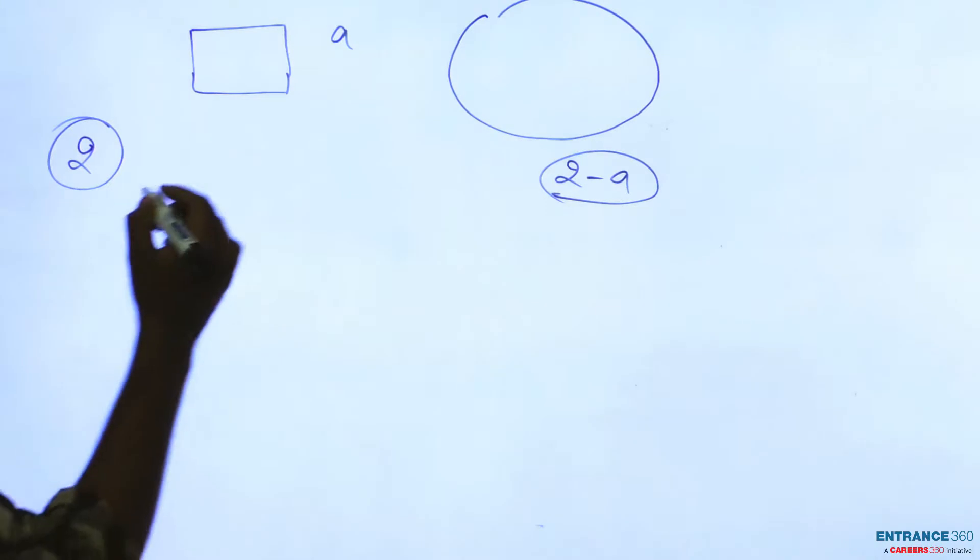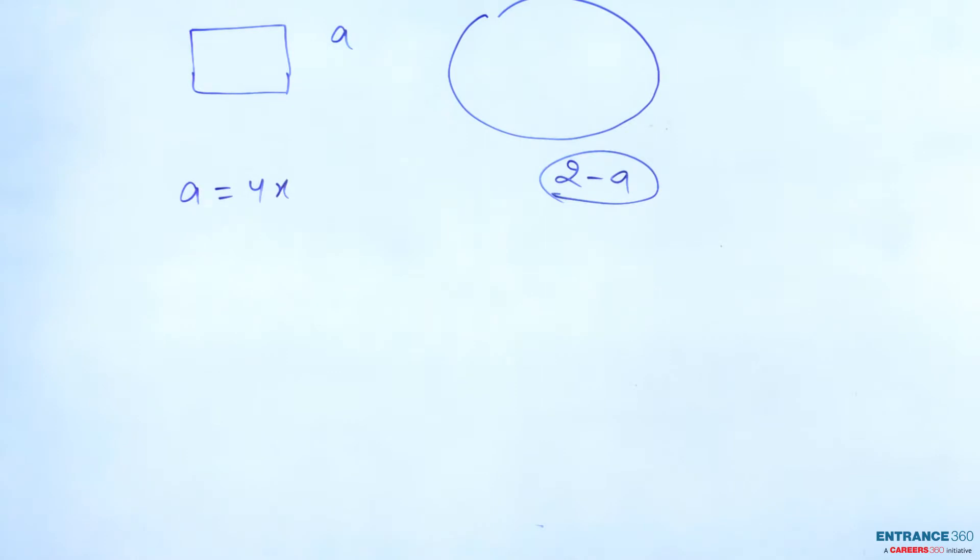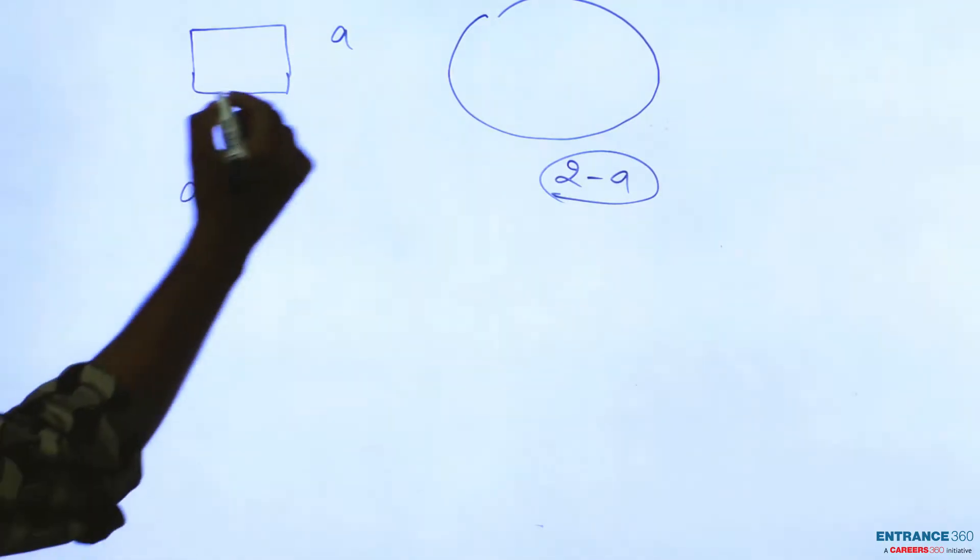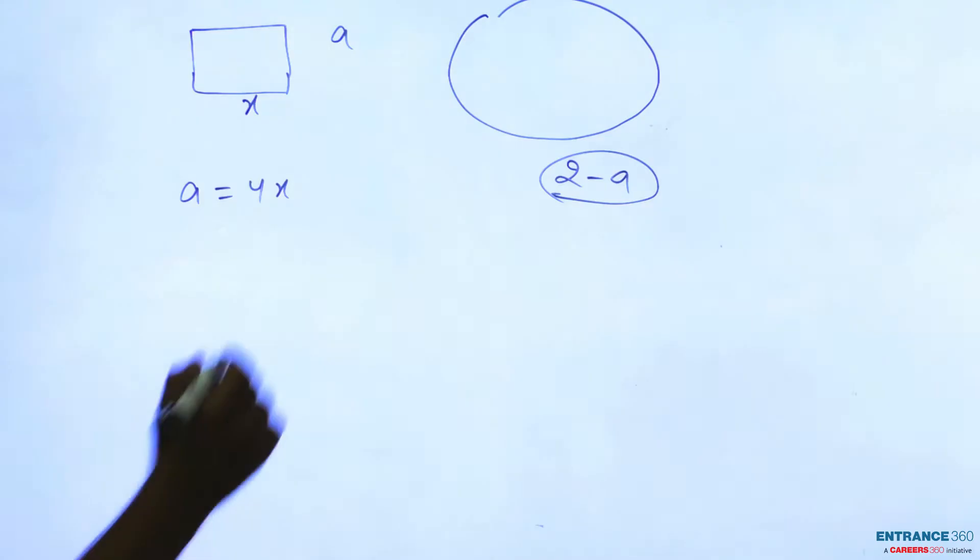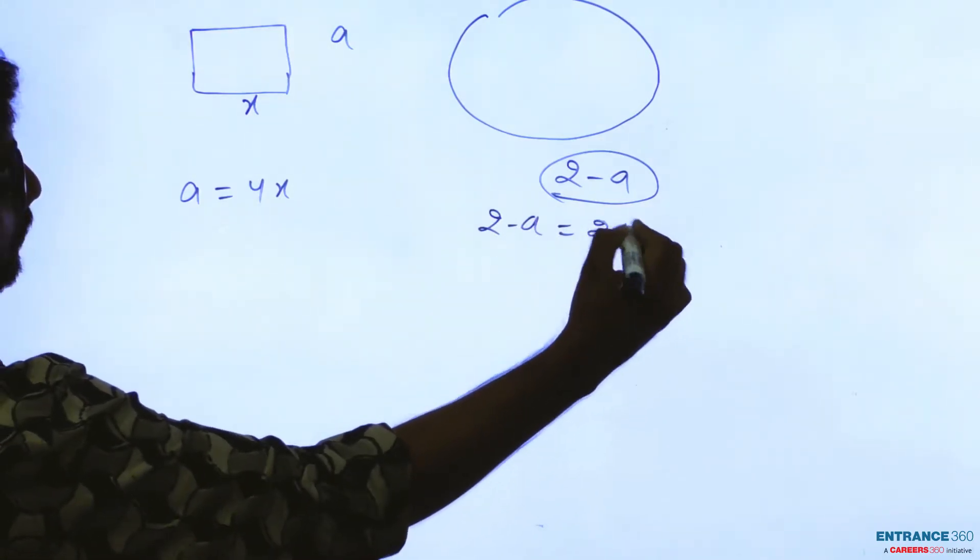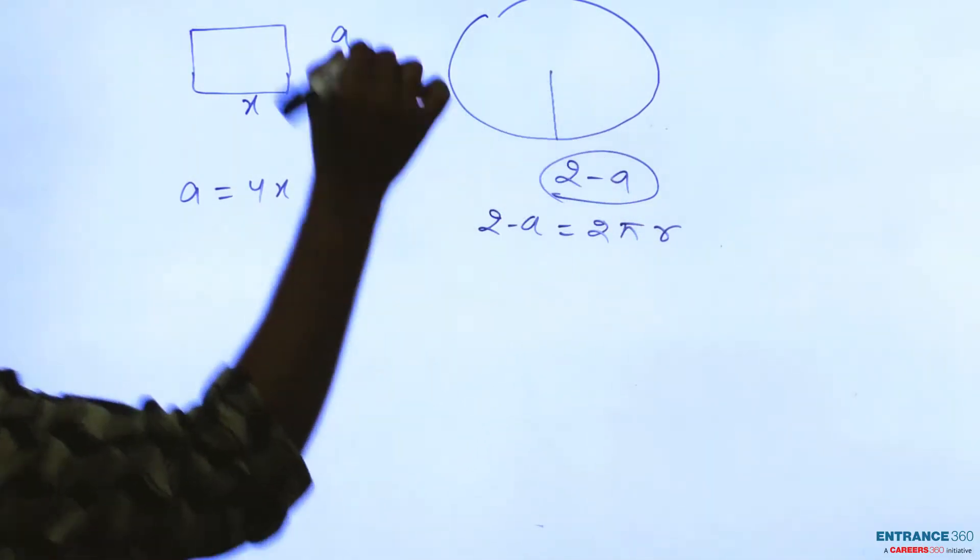Then a will be equal to four x because x will be the side of this square as given in the question, and two minus a will be equal to two pi r, because r is the radius of the circle as given in question.